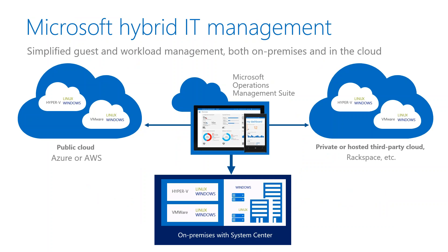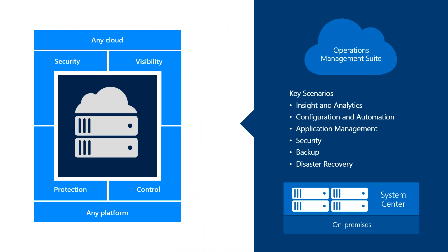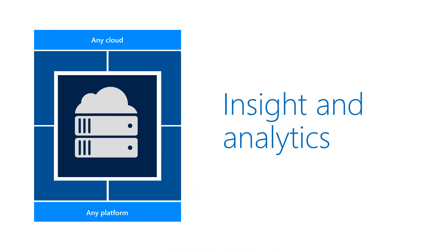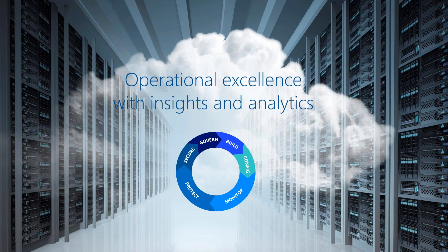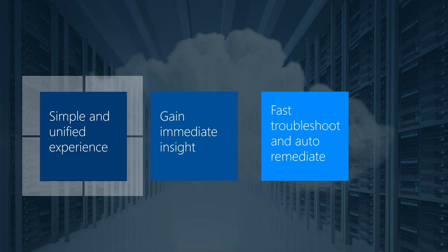From a high level, this is how Microsoft does hybrid management with Microsoft Operations Management Suite in the middle, tied to your existing on-premises workloads — maybe with System Center, though it doesn't have to be — as well as public clouds like Azure or AWS, and private or hosted third-party clouds. Being able to tie all these pieces together in a single place is the goal, and today we're tying into the Insight and Analytics piece.